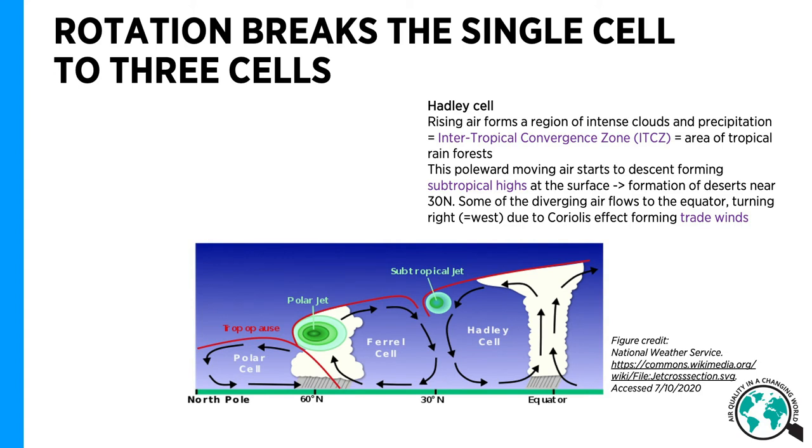Because of conservation of angular momentum, the poleward moving air increases speed. The increased speed and the Coriolis effect are responsible for the subtropical jet close to the tropopause around 30 degrees north.